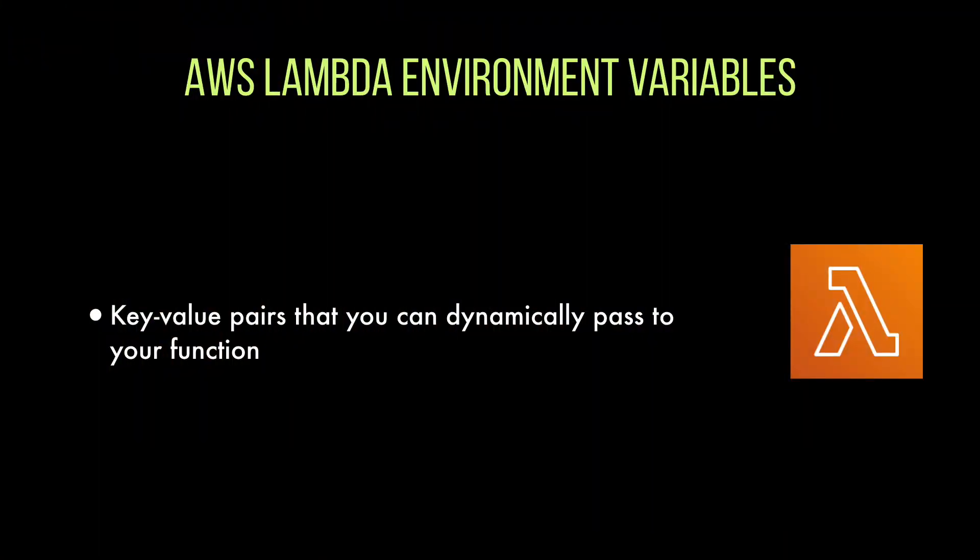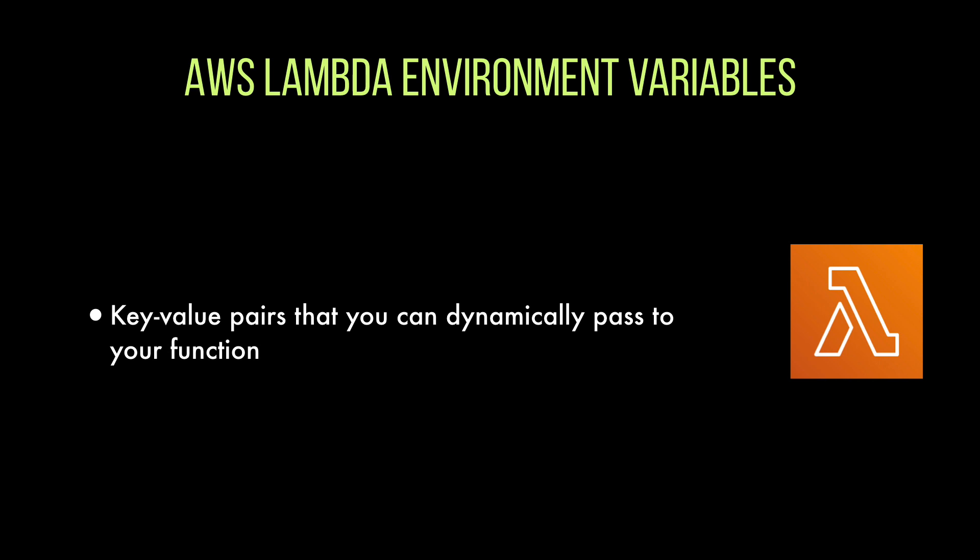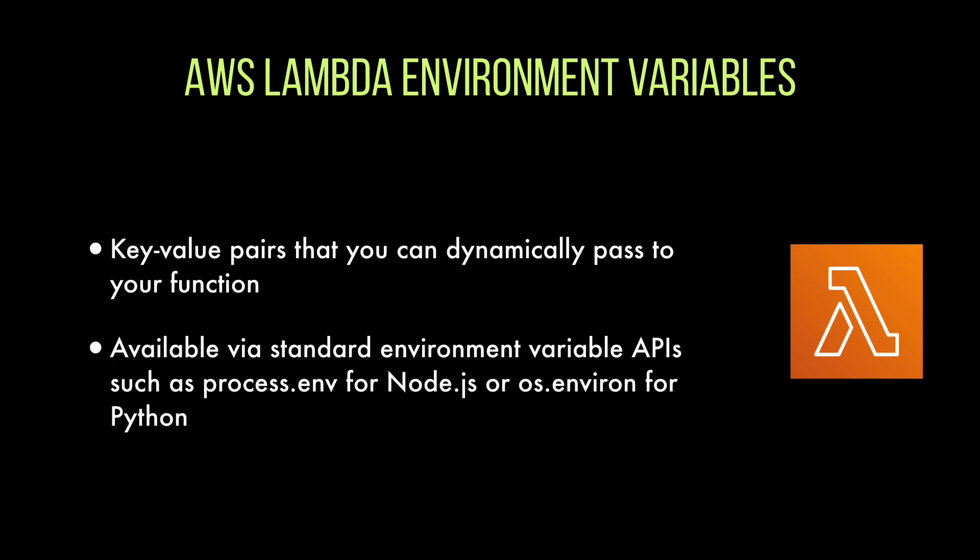Let's go first to slides to refresh what environment variables are and what we want to do, and then let's go to the code. Lambda environment variables — we have talked a lot about this when using the Serverless Framework, and now I want to do the same with SAM. They are key-value pairs that you can dynamically pass to your function; you can get those in Node with process.env or in Python with os.environ.